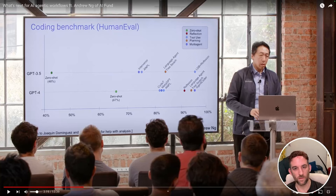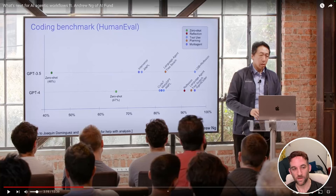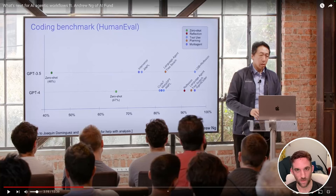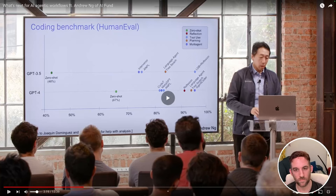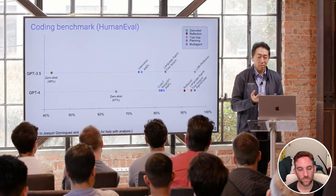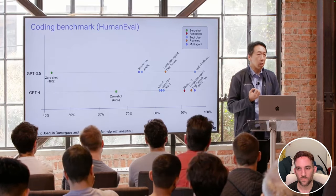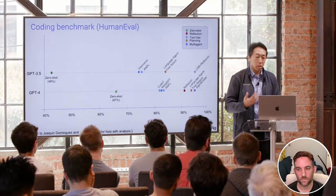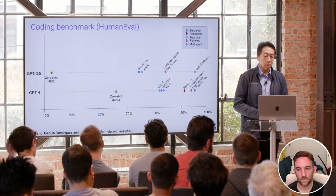GPT-3.5 with an agentic workflow actually outperforms GPT-4 used directly in ChatGPT with the same question. This has significant consequences for how we all approach building applications.